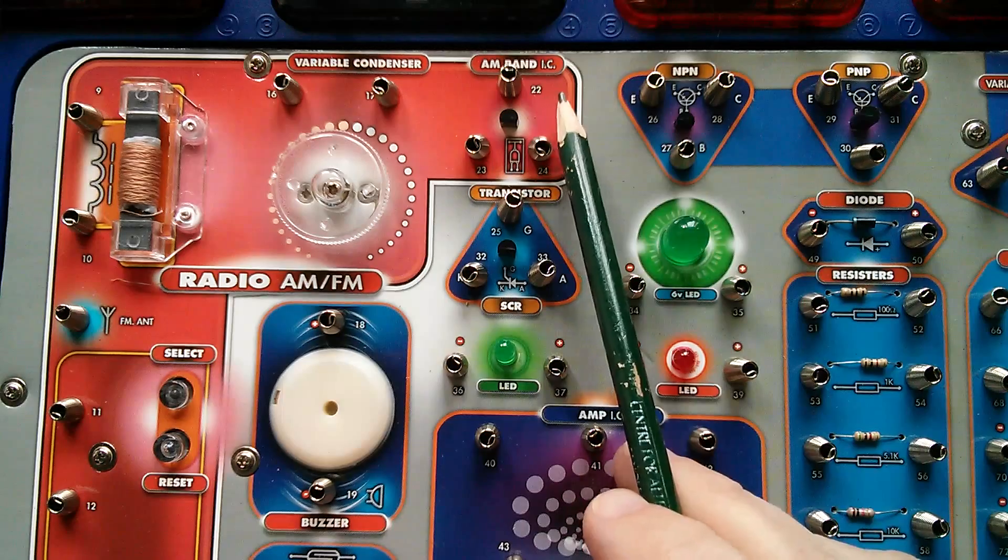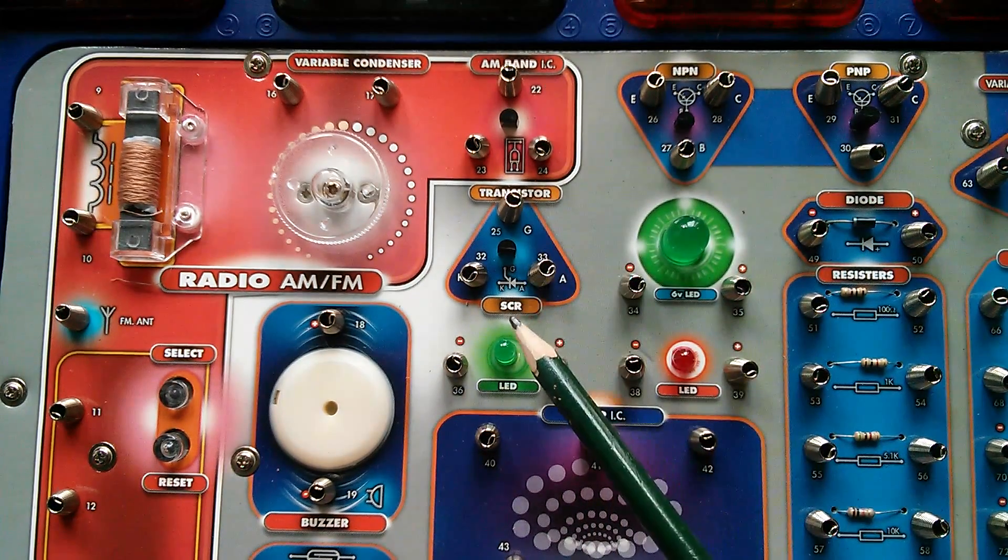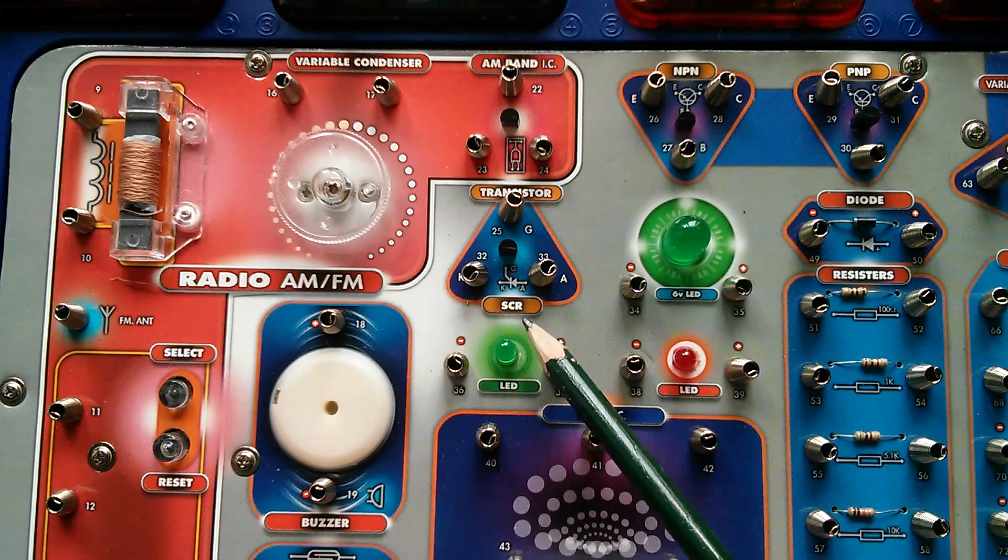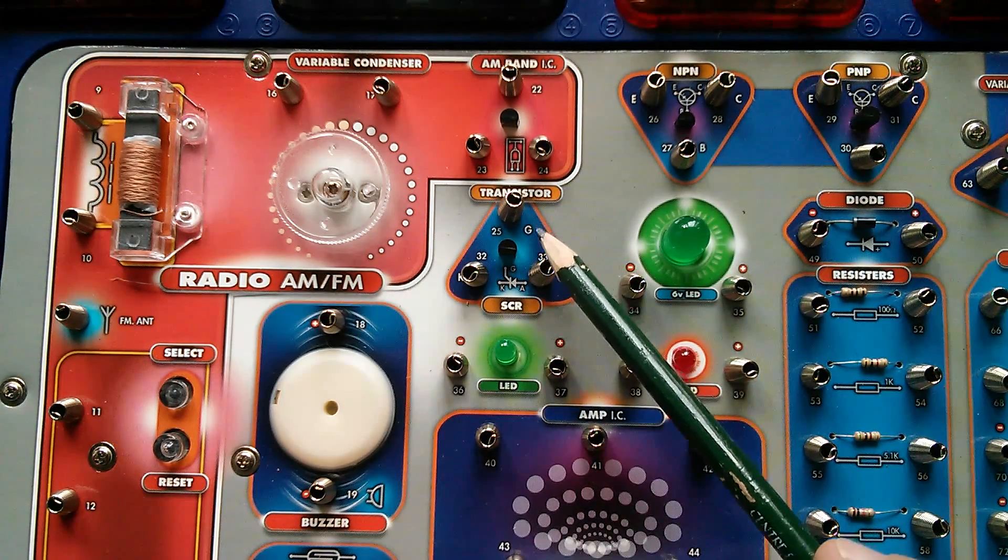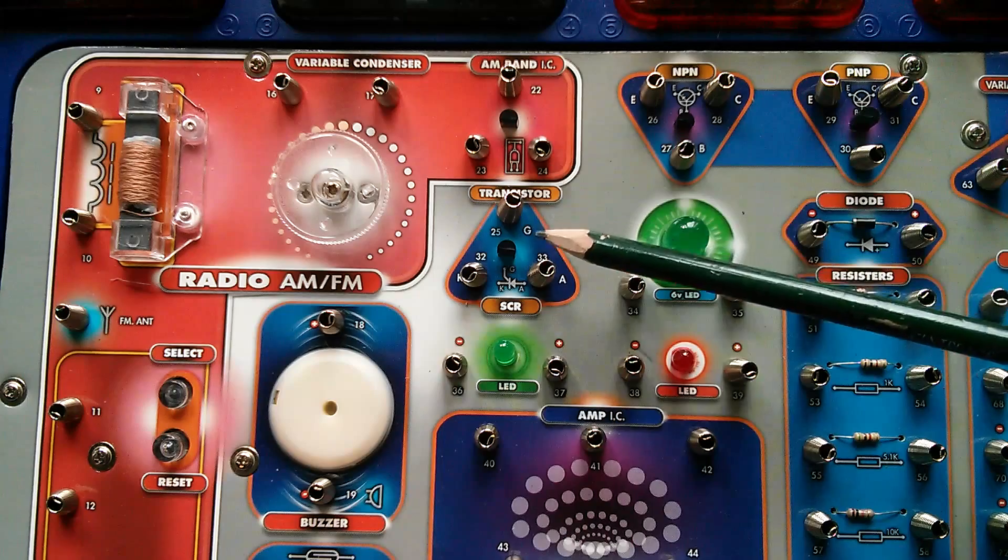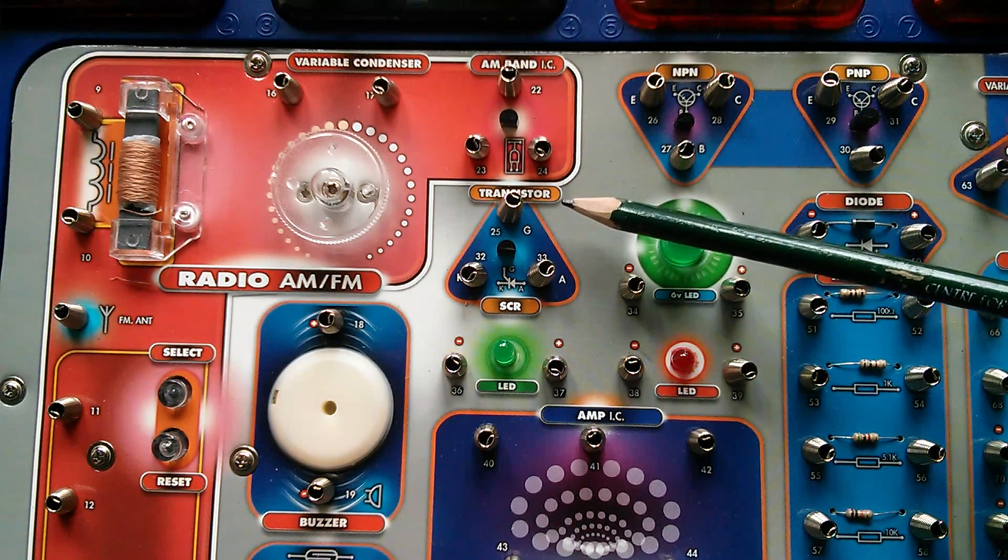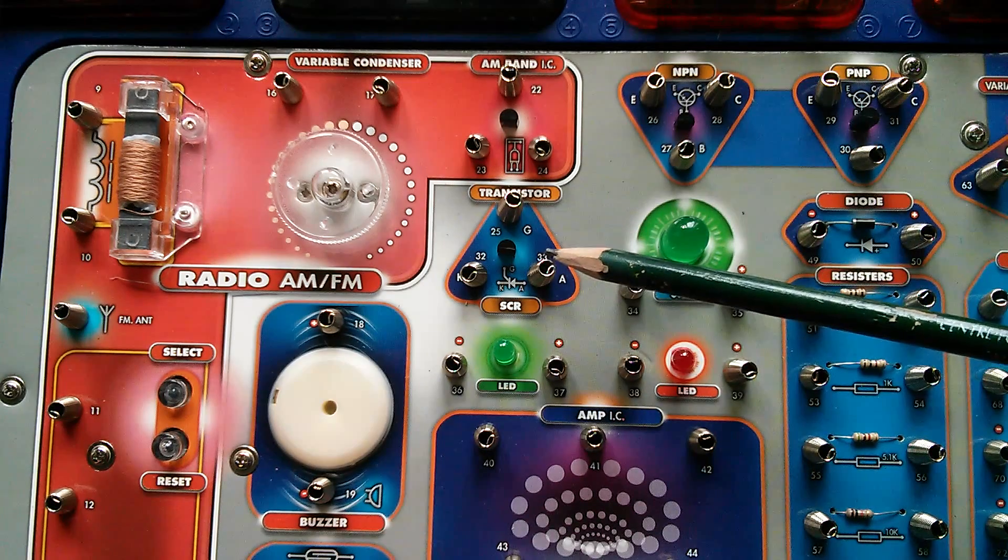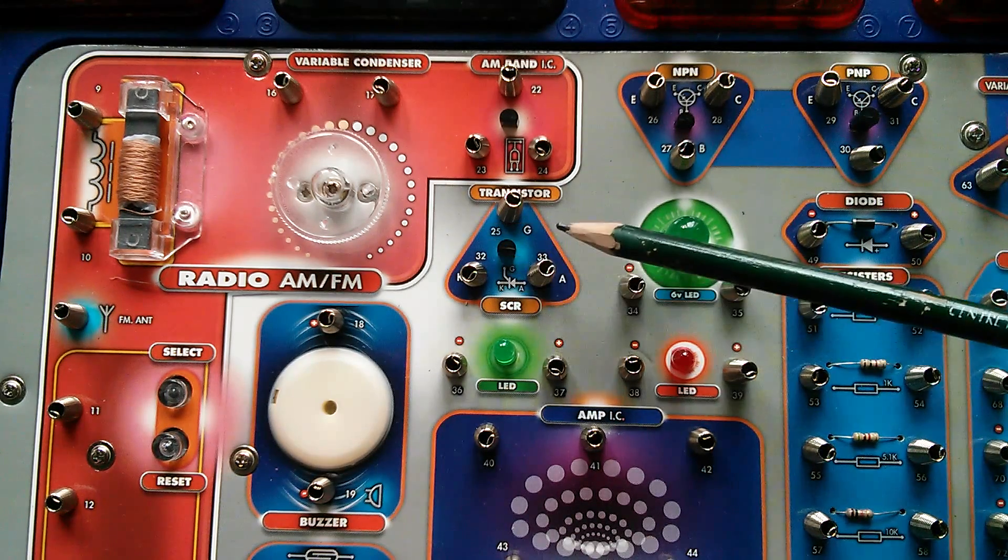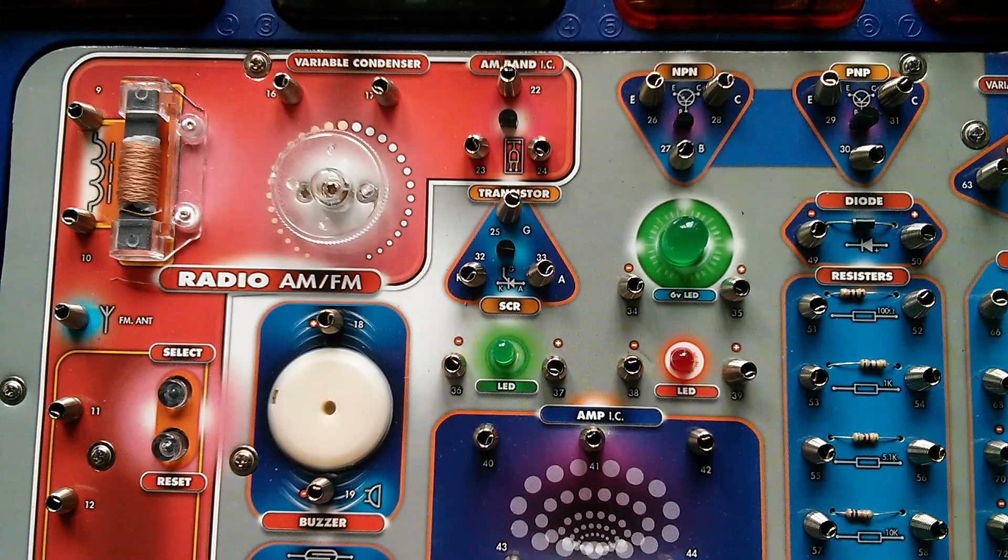Right, over here we've got an AM band IC, integrated circuit. And here we've got an SCR, a silicon-controlled rectifier with its cathode, anode and gate. And then between these two devices, they've just stuck the word transistor. Well, neither of these is really a transistor. Is an SCR a transistor? I don't think you'd generally call a thyristor a transistor. So that's also a bit strange.